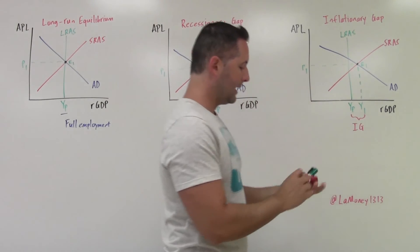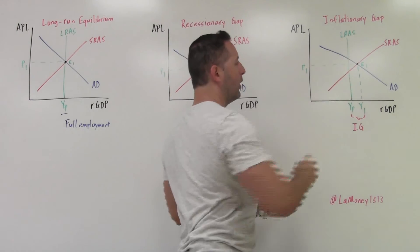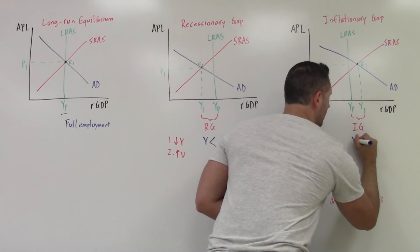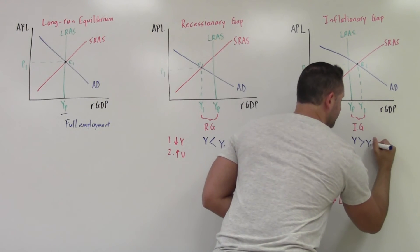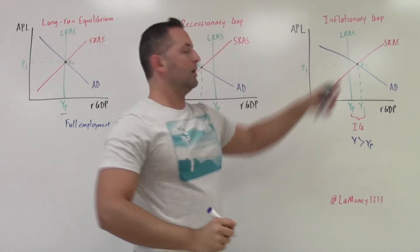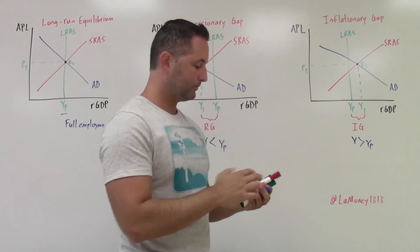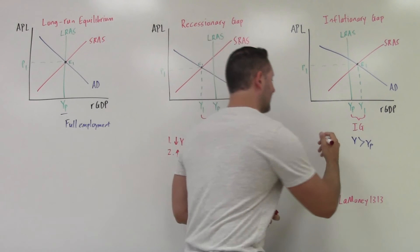The inflationary gap, what we're seeing here is that actual output, E1 is to the right of the LRAS curve. So actual output is greater than potential output. So what that means is we are producing above and beyond what we can do at full employment level.